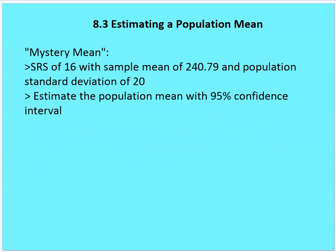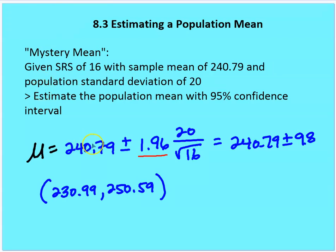We have a sample mean of 240.79 and a population standard deviation of 20. We have an SRS of 16. We want to estimate the population mean with a 95% confidence interval. So we set this up as 240.79 plus or minus 1.96 — that's the Z value from the table at 95% confidence — times 20 divided by the square root of 16, which gives us 240.79 plus or minus 9.8, or the interval from 230.99 to 250.59.